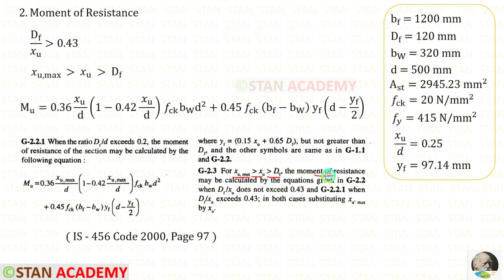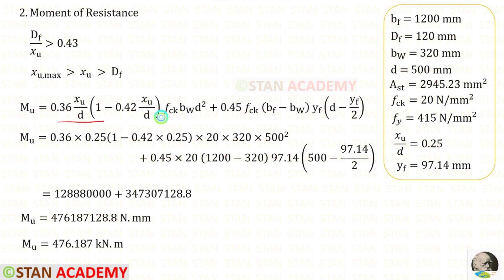The moment of resistance can be calculated when DF upon XU exceeds 0.43 using G 2.2.1. But we have to substitute XU max by XU. So instead of XU max, I have applied XU. In this one we can apply all of the values so that we will get this. We can divide this by 10 power 6 so that we will get the answer in kNm.